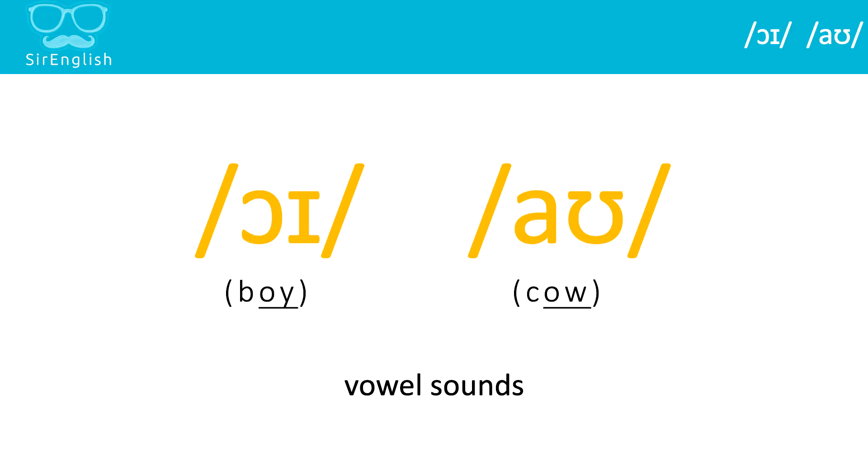The next two sounds are these two vowel sounds. So these two vowel sounds are both two vowels squeezed together. As we've seen before, when we make these sounds, the shape of our lips and mouth changes in the middle of the sound.